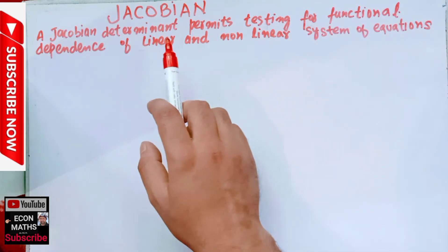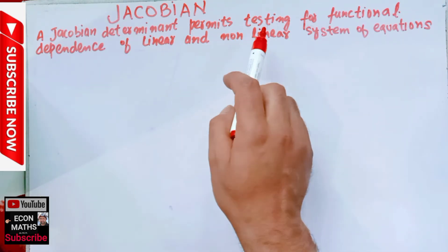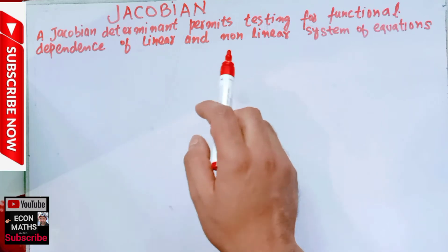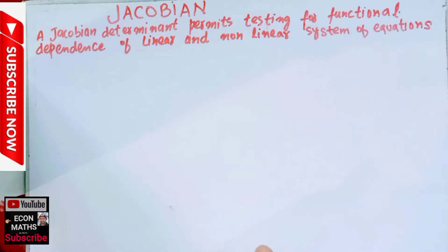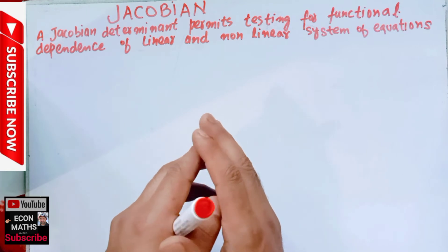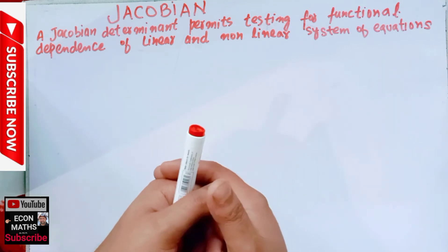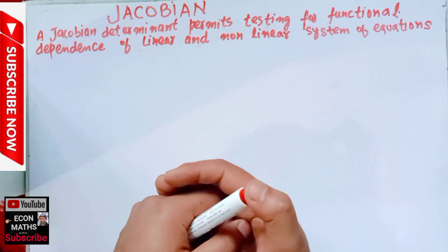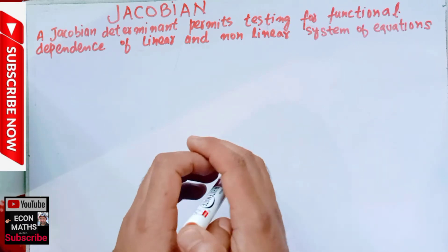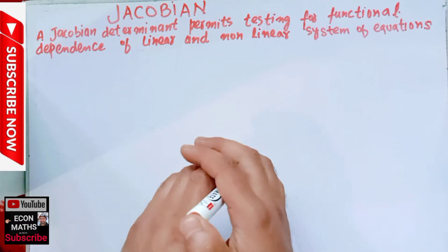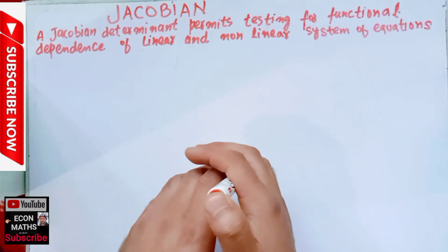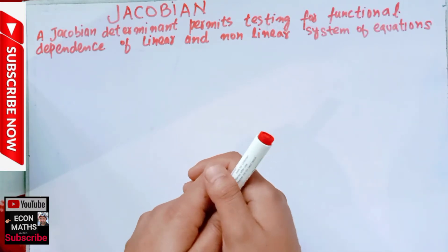A Jacobian determinant permits testing for functional dependence of linear and nonlinear systems of equations. This Jacobian determinant helps us to test whether linear equations or nonlinear systems of equations have a functional dependence or not. For that, we use the Jacobian determinant.